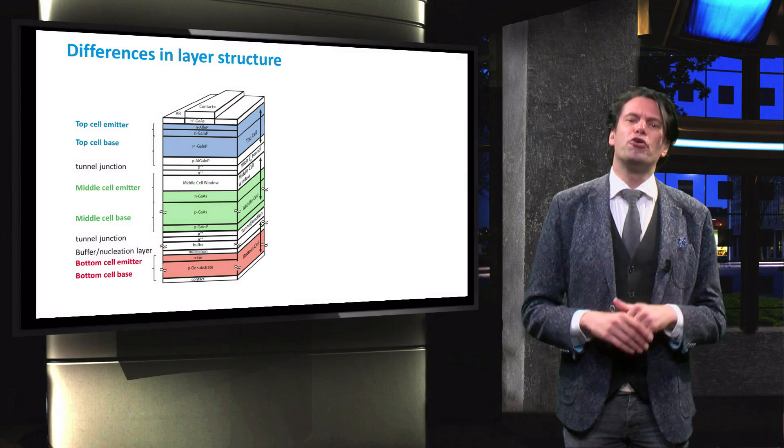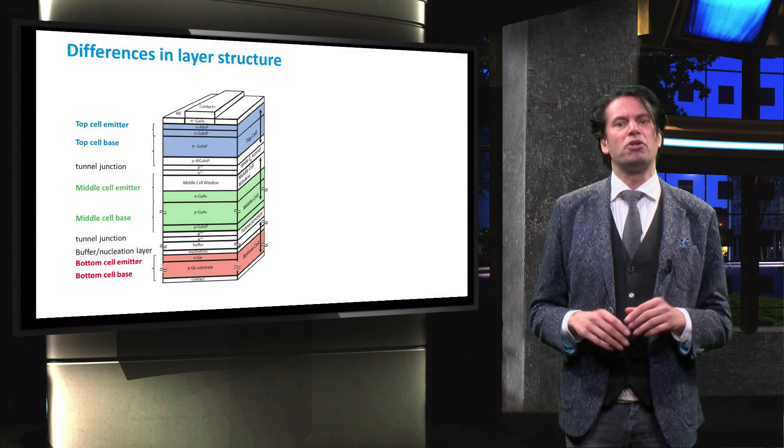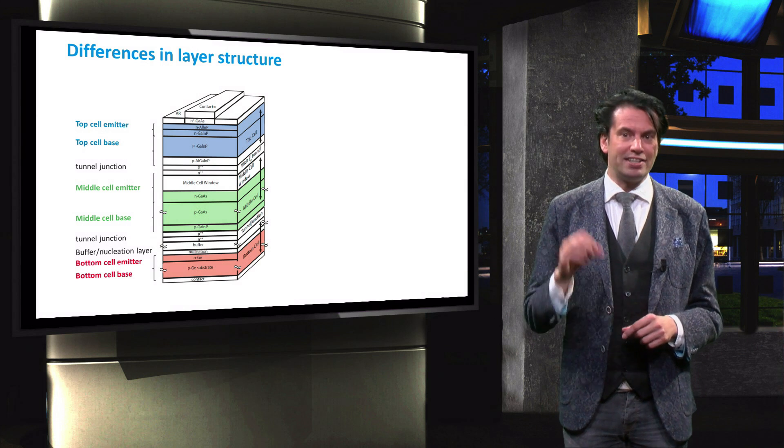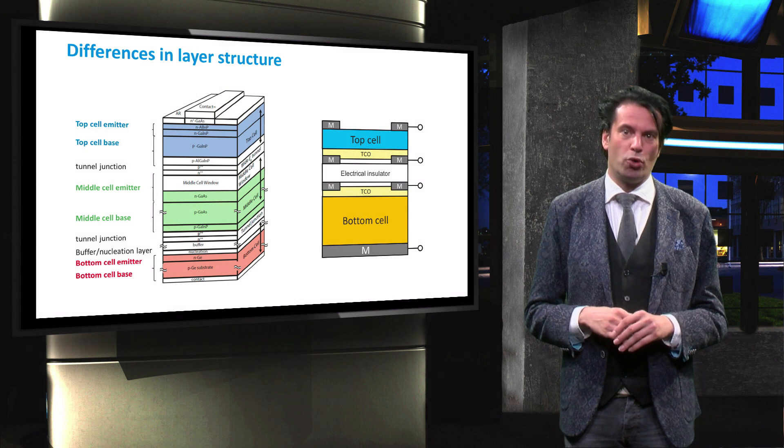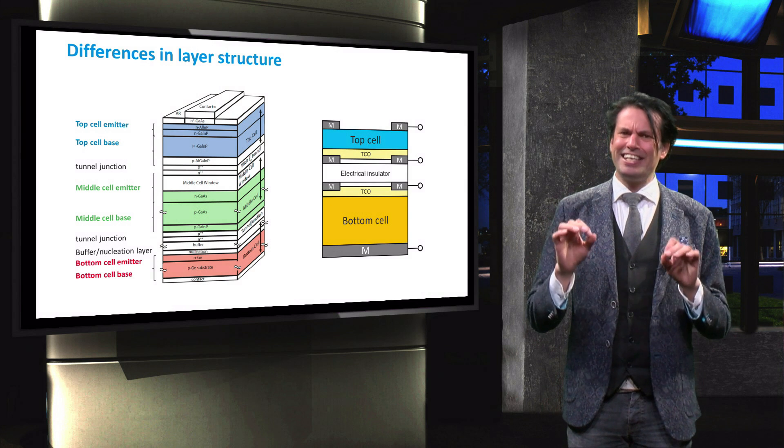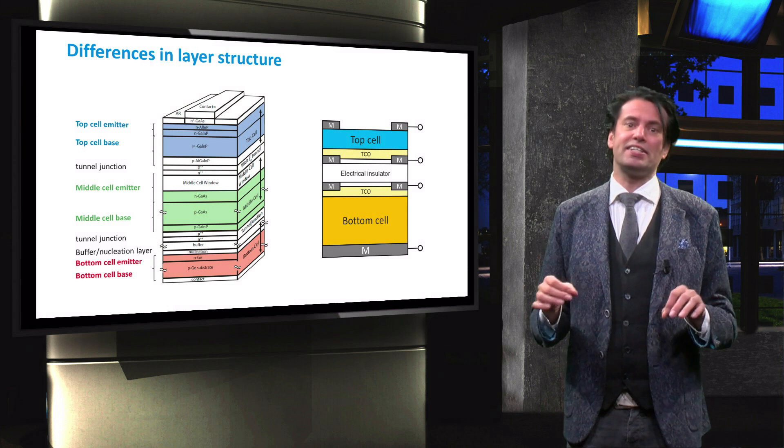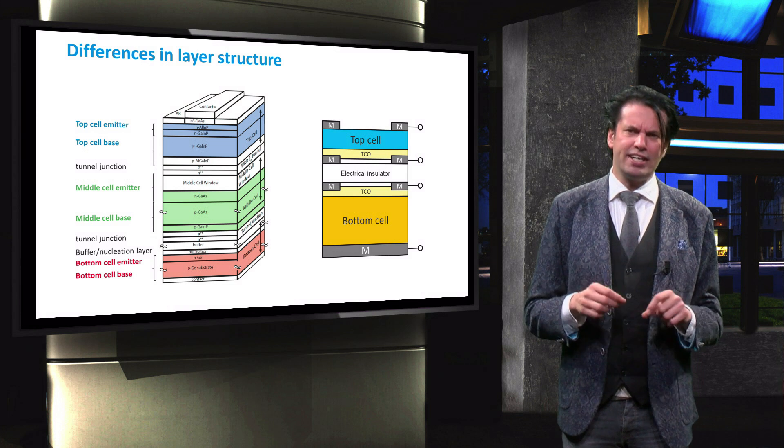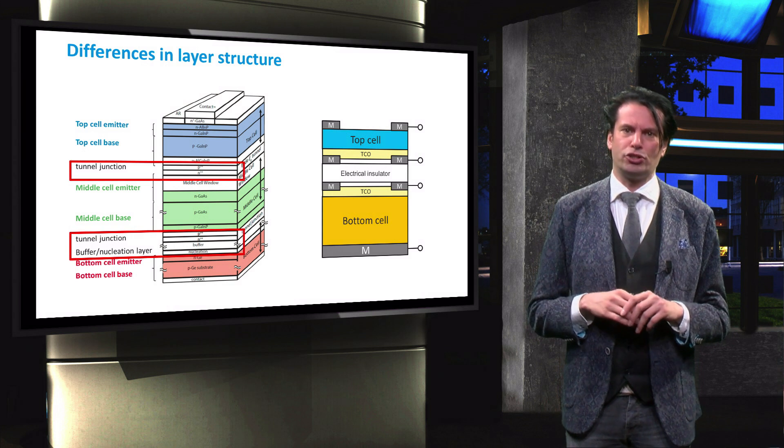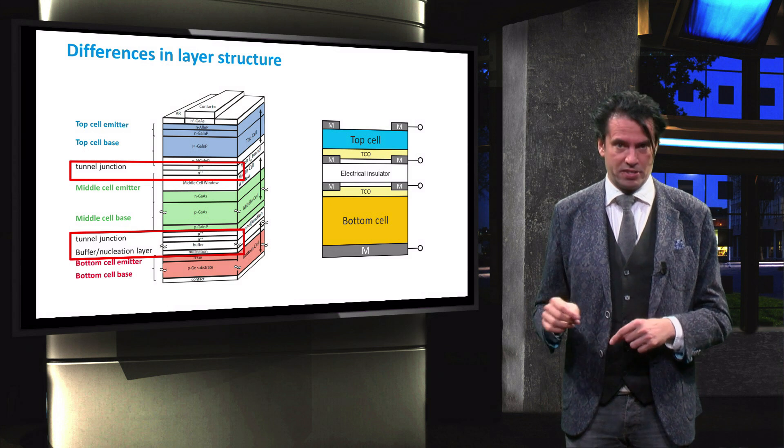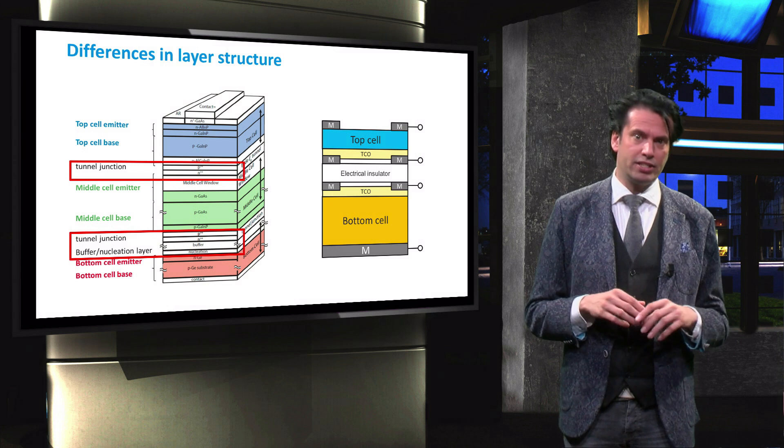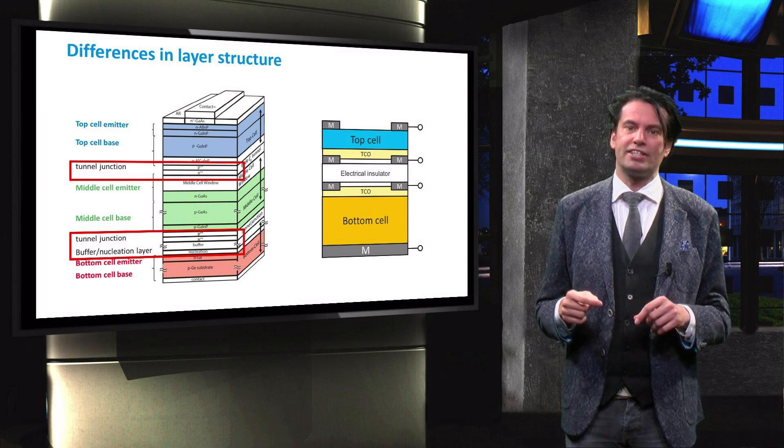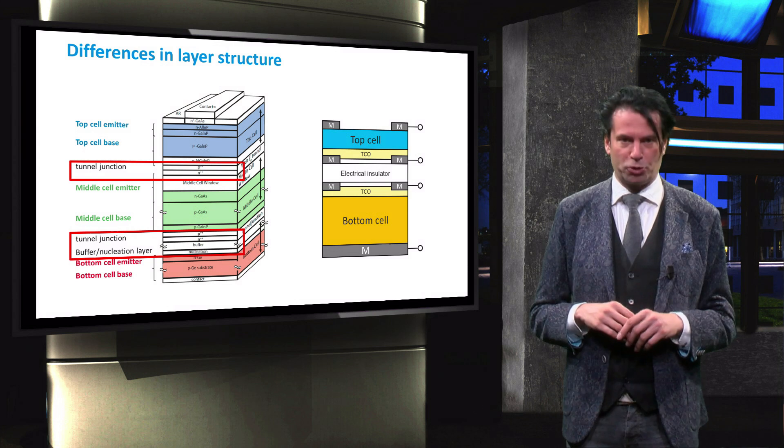Let us review the layer structure of a two terminal 3-5 multi-junction device and the layer structure of a four terminal tandem structure in more detail. Since the individual cells are separated in the four terminal device, there are no tunnel recombination junctions and buffer layers present. These layers that are present in the two terminal device can potentially lower the voltage of the device and increase the parasitic absorption.